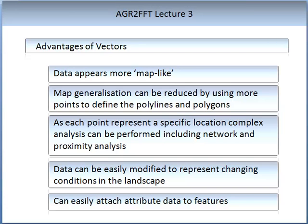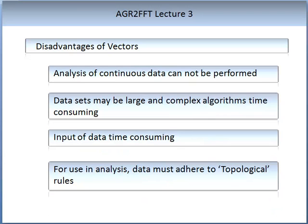Data can be easily modified to represent changing conditions in the landscape, and attribute data can be added to features easily. There are, of course, disadvantages of vectors: the analysis of continuous data cannot be performed; data sets may be large and complex; algorithms can be very time consuming; the input of data is time consuming; and for use in analysis, data must adhere to topological rules — for example, no overlap or overshoots are allowed in this form of data.